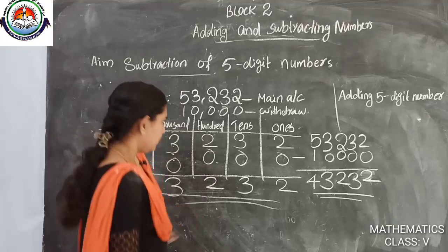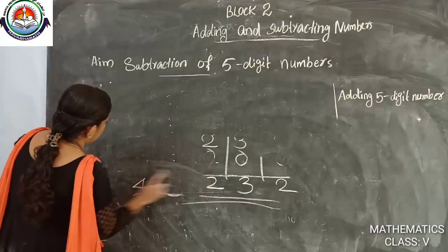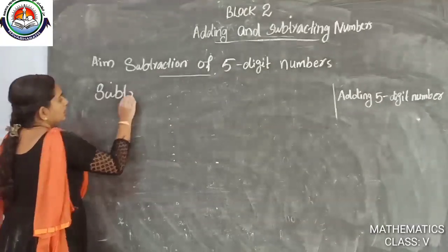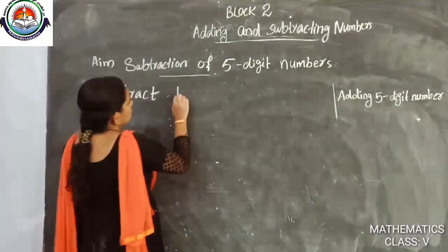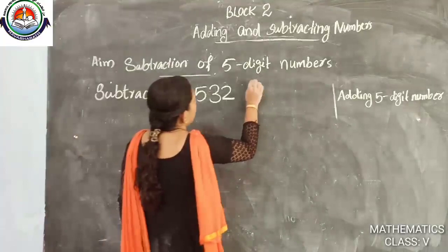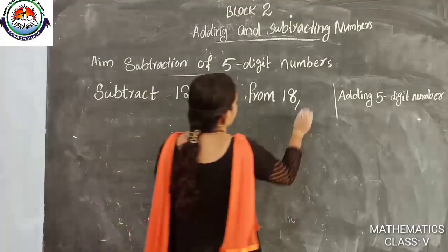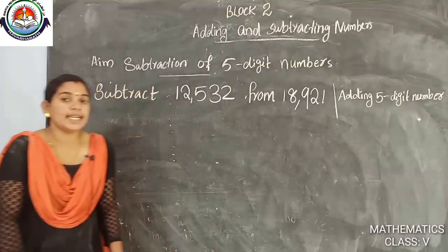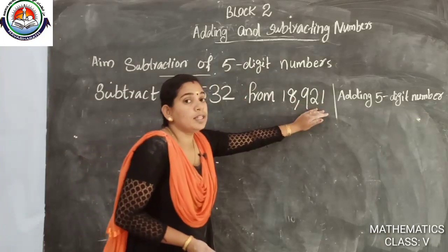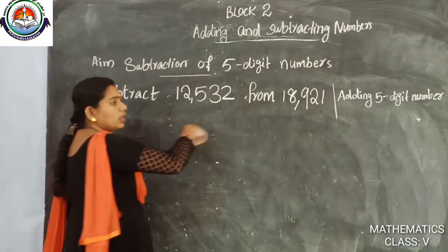We will do another problem. Subtract 12,532 from 18,921. We write the first number on top, the second number below. We are drawing the place value chart with columns for ones, tens, hundreds, thousands, and ten-thousands.